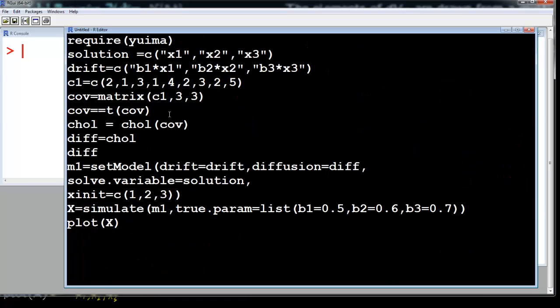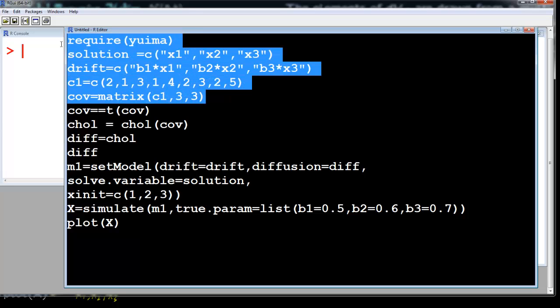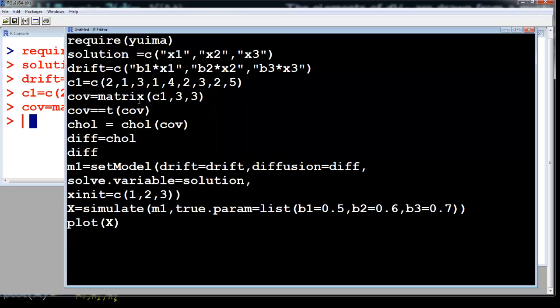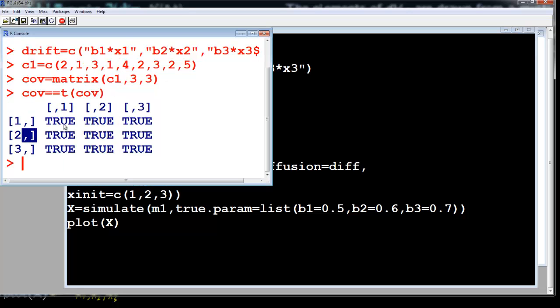So you can copy paste the code from the description of the video. So let us run this. So we have a covariance matrix. So let us now check whether it is equal to its transpose. So true, true, true. It gives true for all the three by three entries here for this matrix. So we can do the Cholesky decomposition.